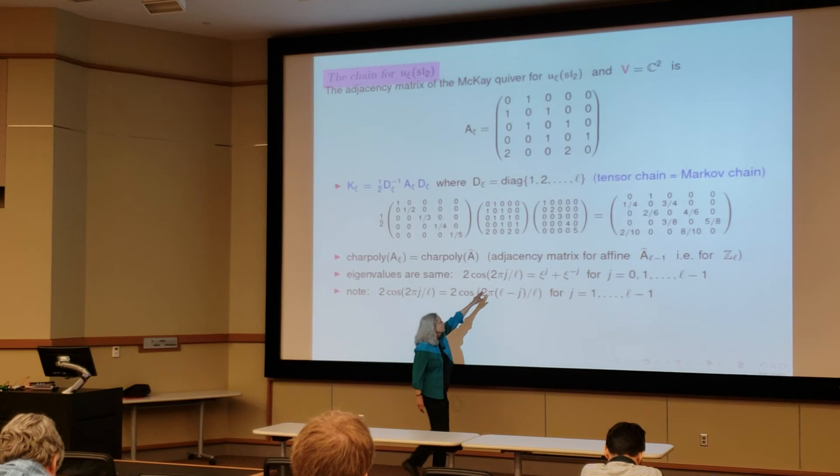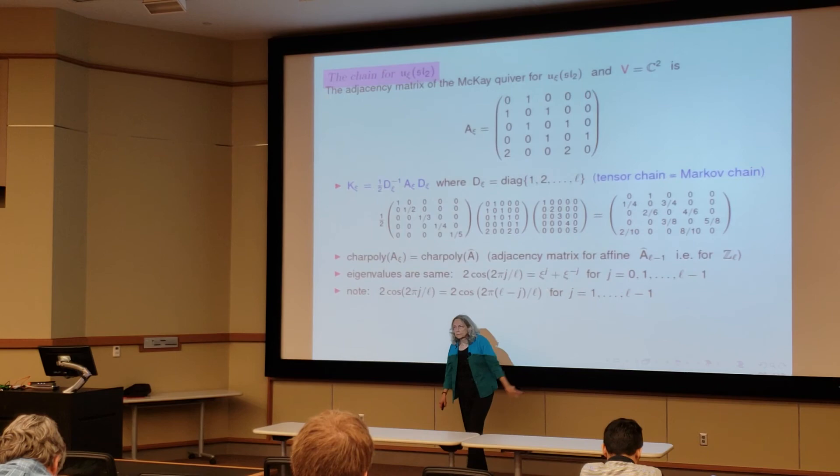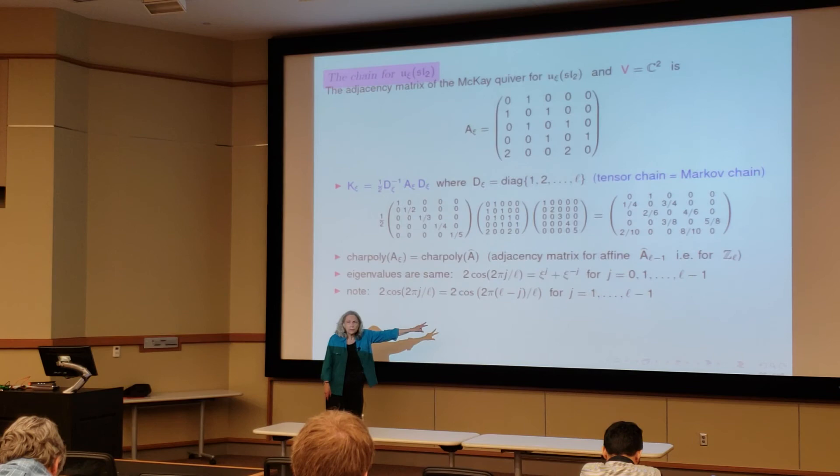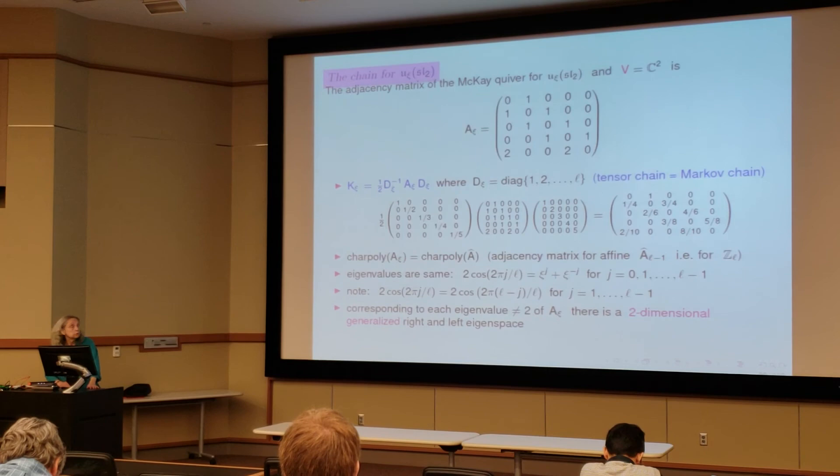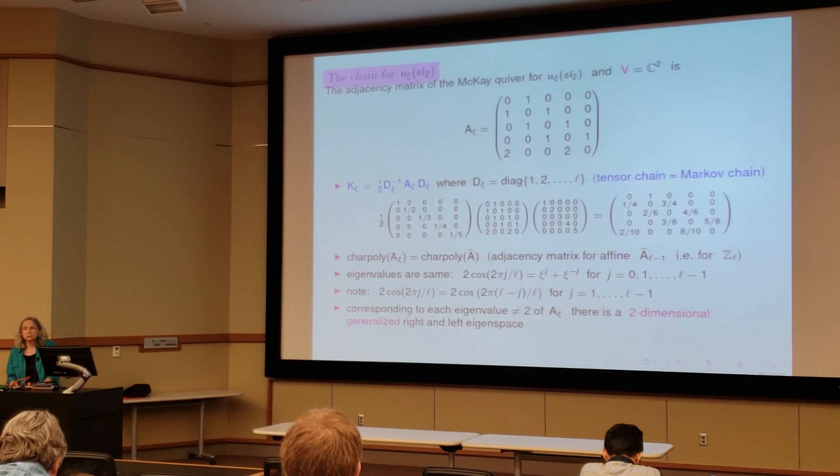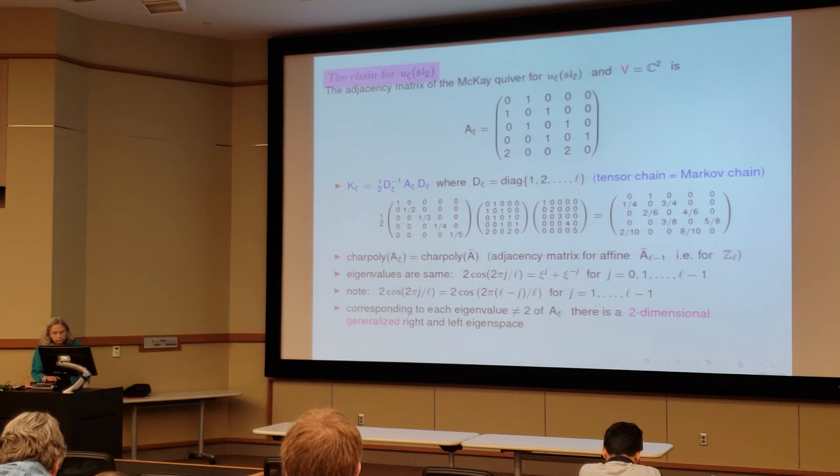And notice that two of these cosines are the same. So you have the eigenvalue when J is zero, so that's eigenvalue two. We expect that, right, because that's the eigenvalue corresponding to P. And then we have these eigenvalues that correspond in pairs. Corresponding to each eigenvalue not equal to two, there's a two-dimensional space of generalized eigenvalue. So you have to work with Jordan blocks here, not with eigenvalues.